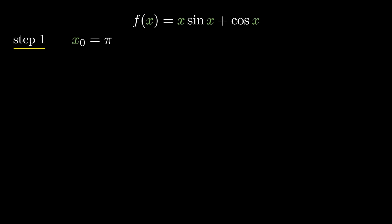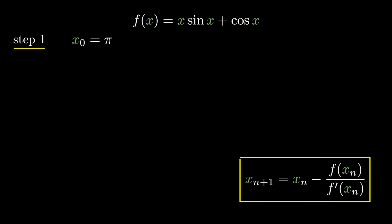Newton-Raphson formula is x_(n+1) = x_n − f(x_n) / f'(x_n). That is, the next value of x equals the current value of x minus the ratio of the function value to its derivative value.